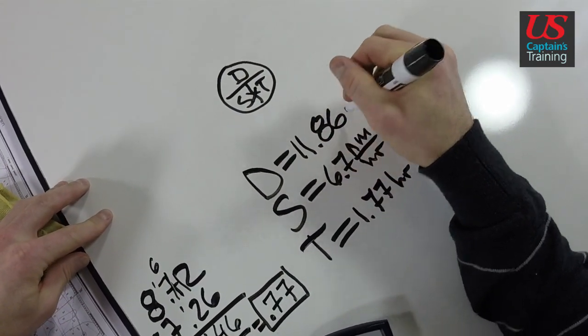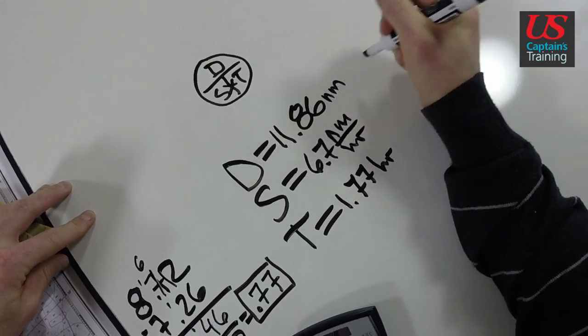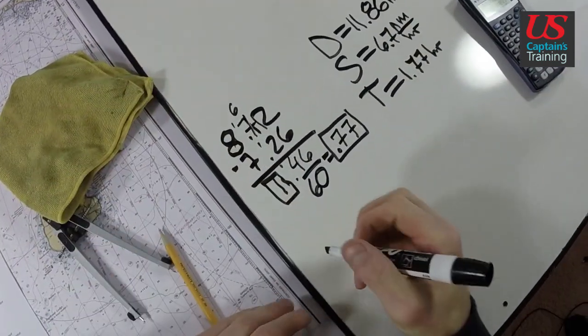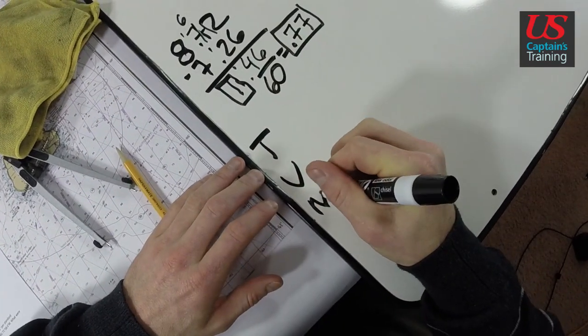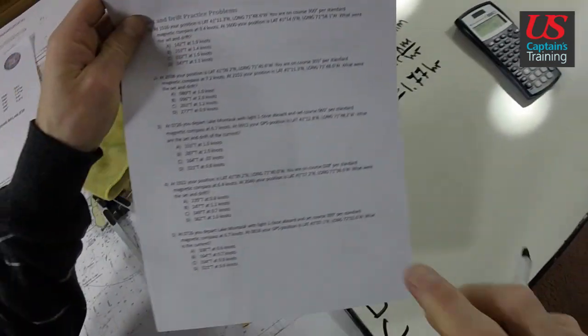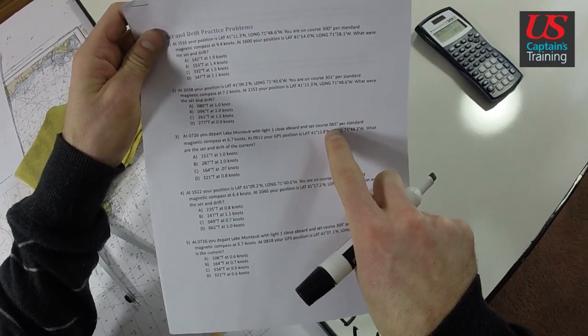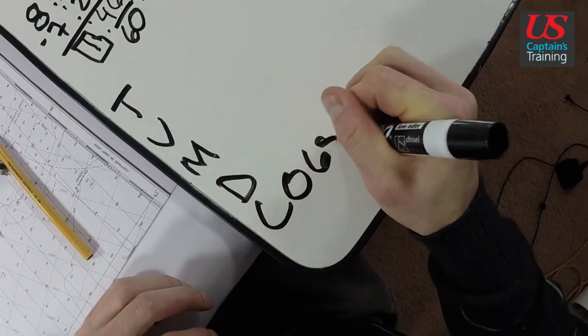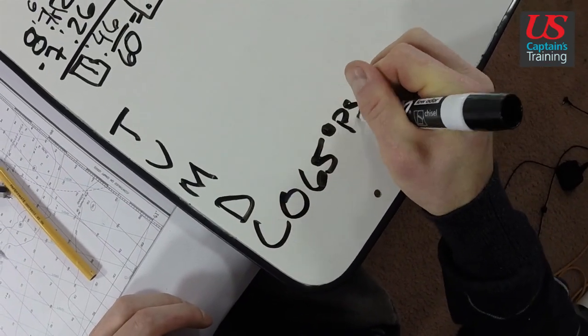11.86 nautical miles. Now we know how far down our course we're going. Now what is our course? TVMDC. Our course was 065 PSC, 065 degrees PSC.